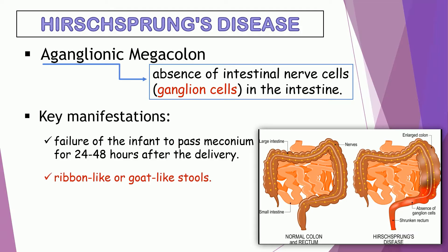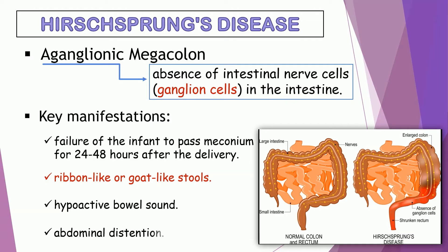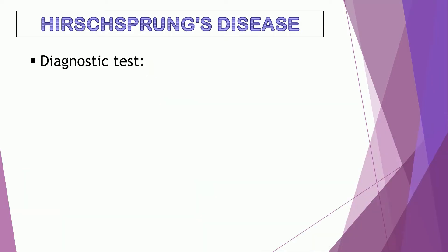Since peristalsis is affected, the stools are ribbon-like or goat-like. There is also hypoactive bowel sound and abdominal distension. Diagnostic tests include biopsy, which will show an absence of ganglion cells. Management is a colostomy.